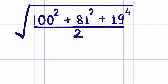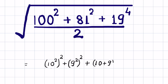We can write 100 squared as (10 squared) whole raised to the power 2, and 81 as (9 squared) whole raised to the power 2. Now 19 we can write as 10 plus 9, so we have (10 plus 9) whole raised to the power 4, all upon 2, under the square root.